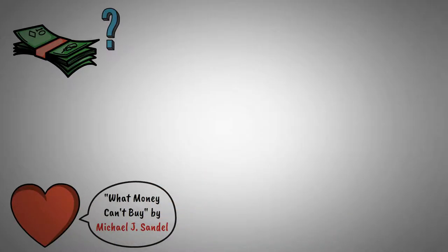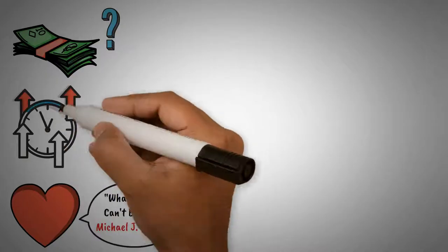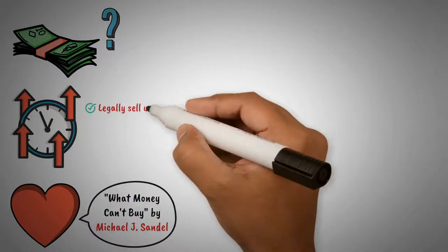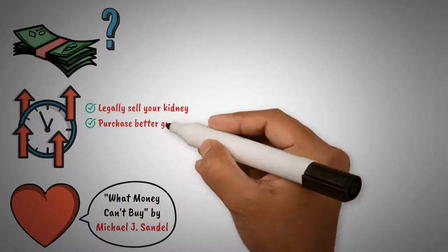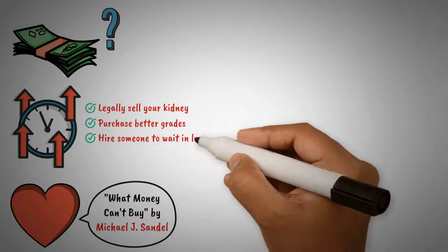Are there certain things that money shouldn't be able to buy? This thought-provoking question lies at the heart of the book, especially because we live in a society where you can legally sell your kidney, purchase better grades, and even hire someone to wait in line for you.